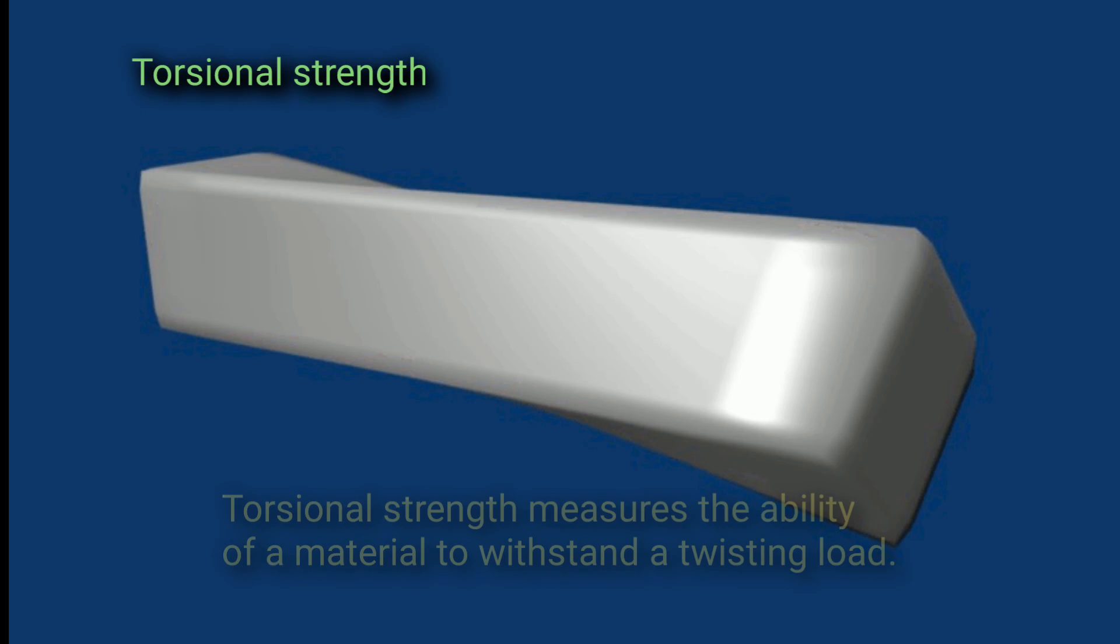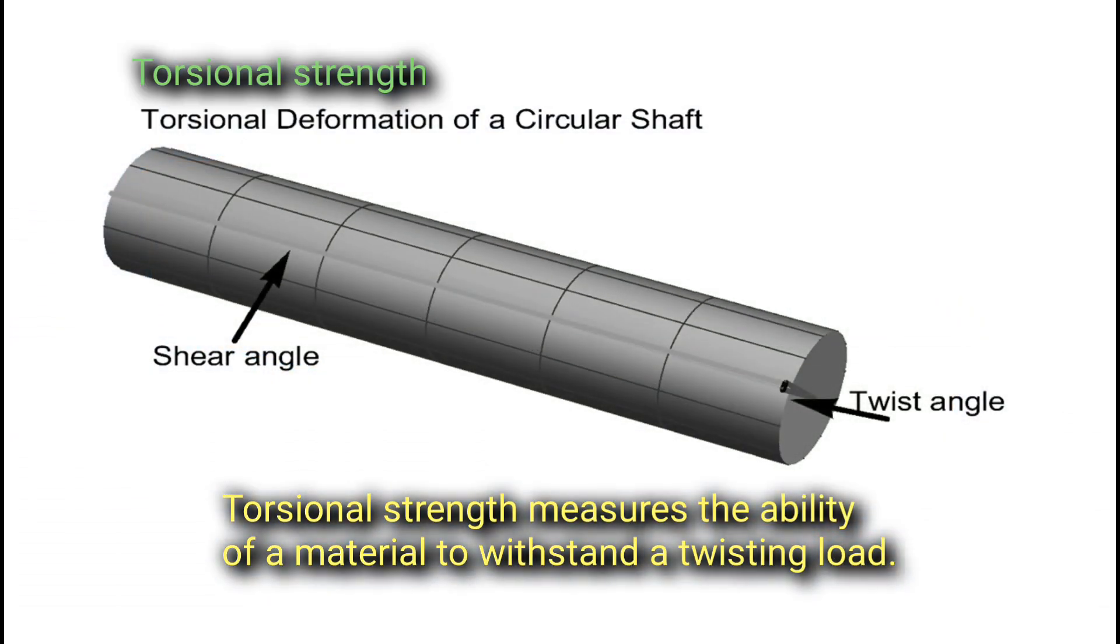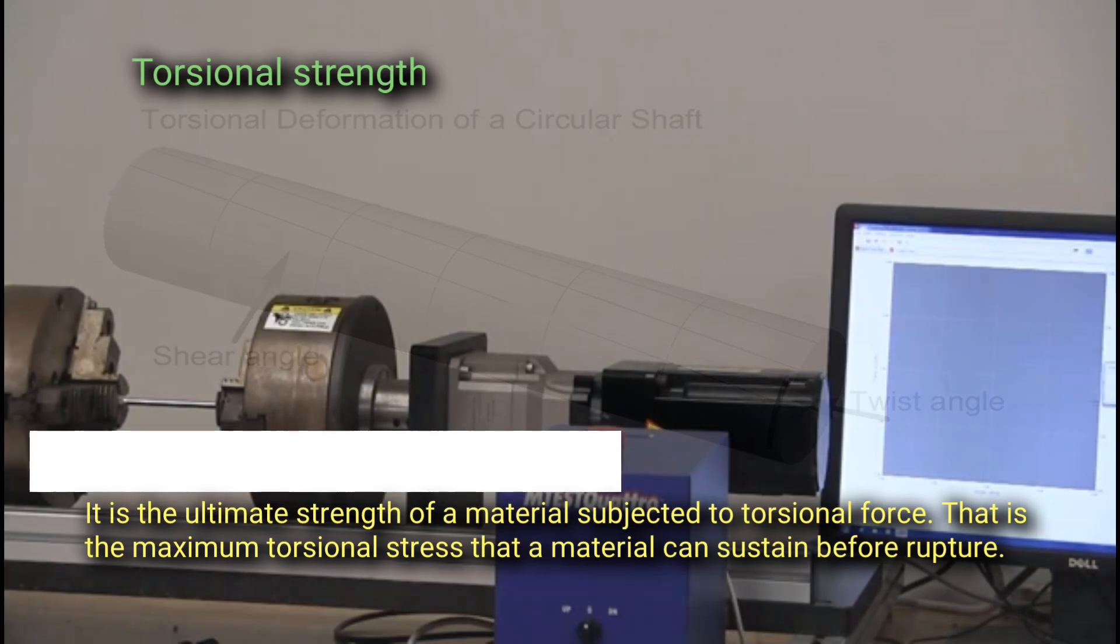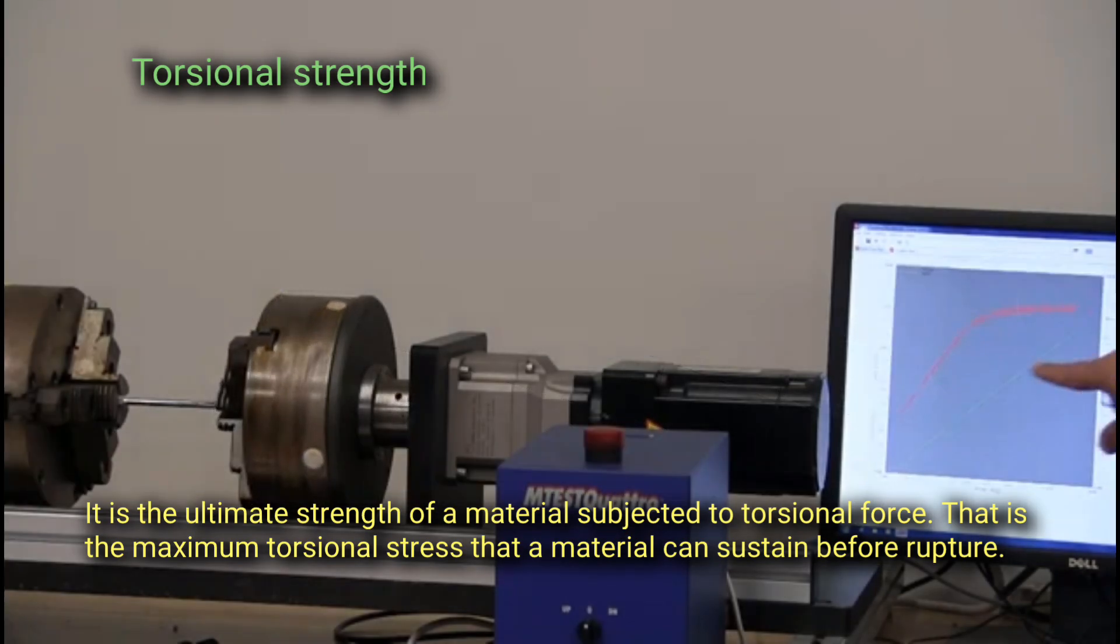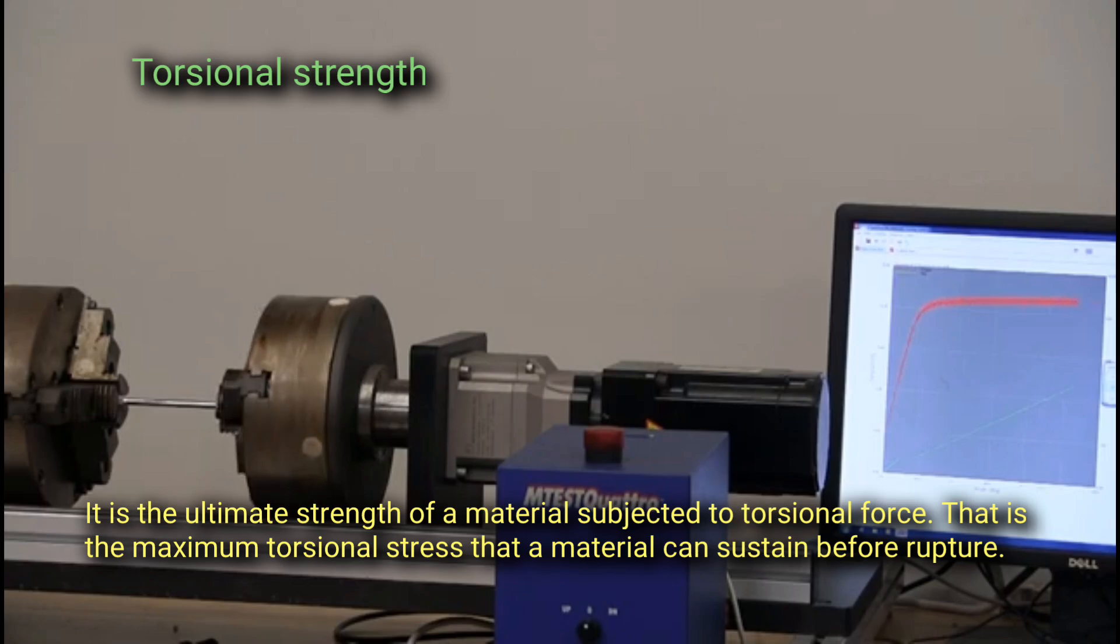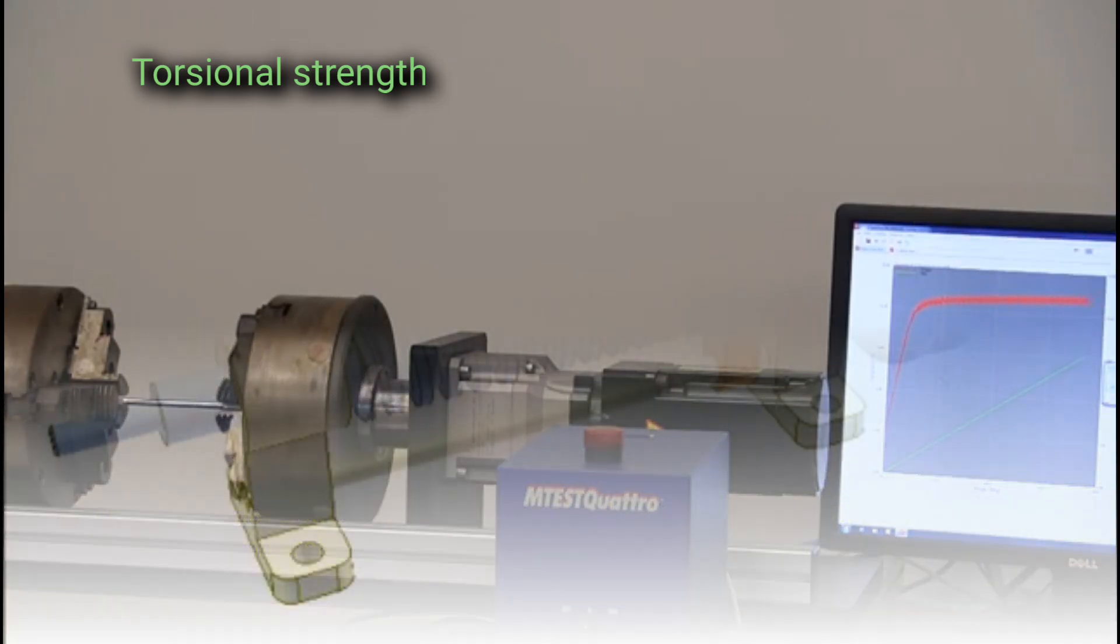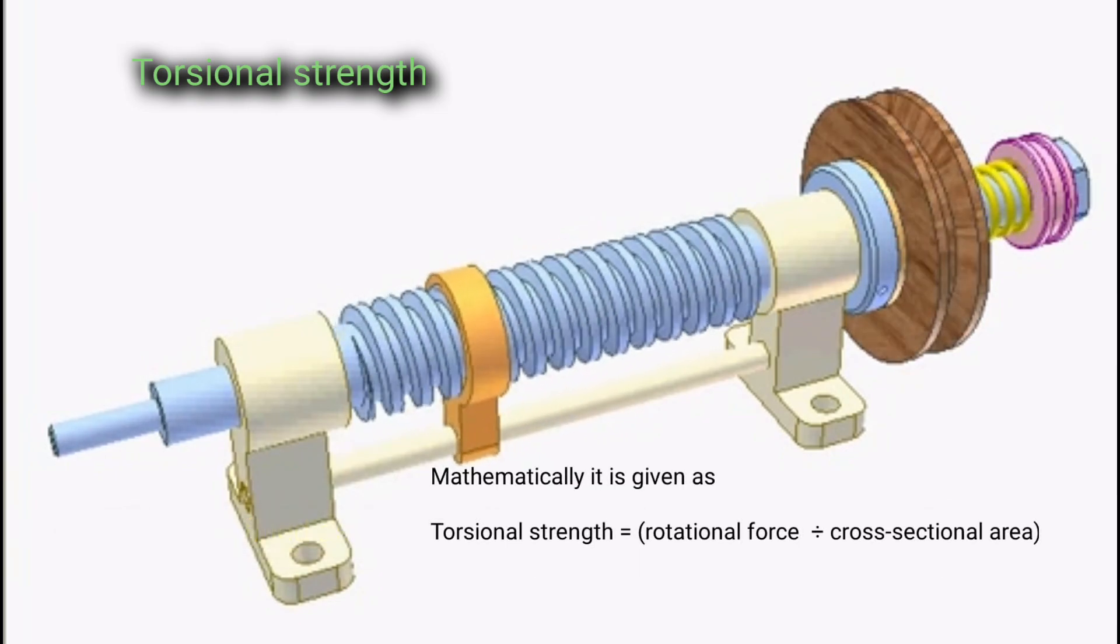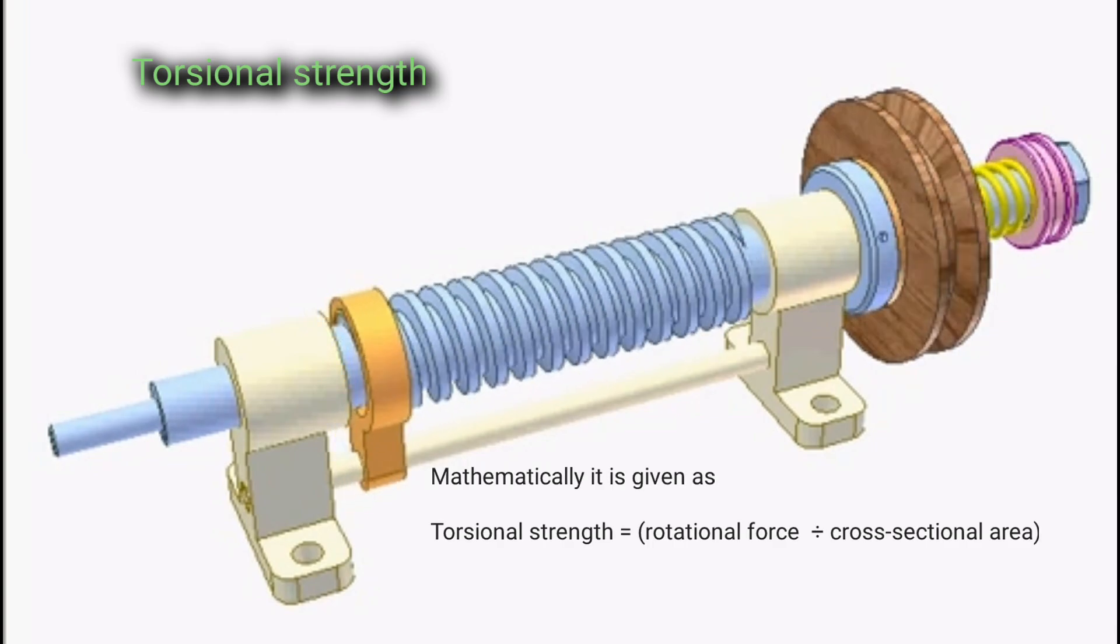Torsional strength. Torsional strength measures the ability of a material to withstand a twisting load. It is the ultimate strength of a material subjected to torsional force. That is, the maximum torsional stress that a material can sustain before rupture. Torsion is defined as the twisting of an object due to torque applied to it. Mathematically, it is given as torsional strength equals rotational force divided by the cross-sectional area.